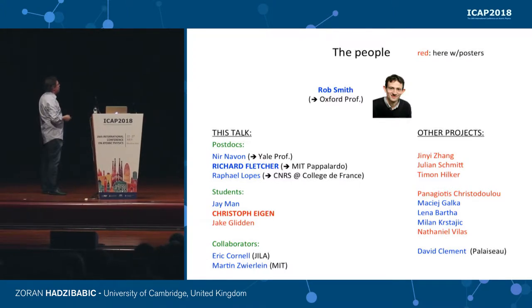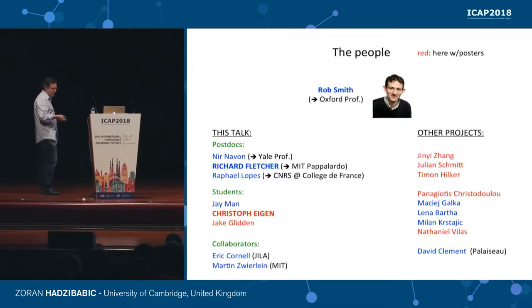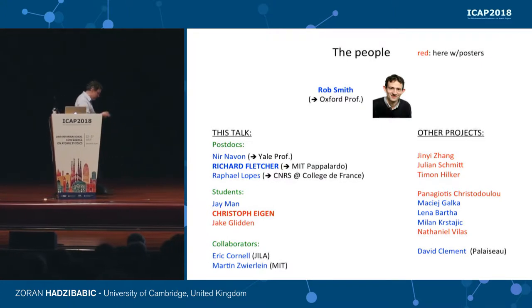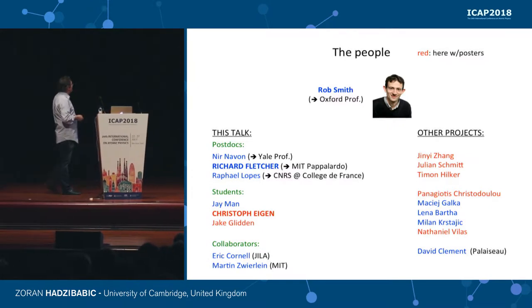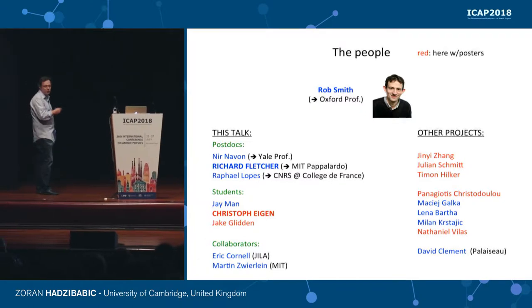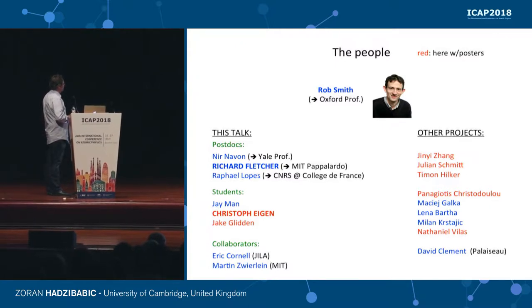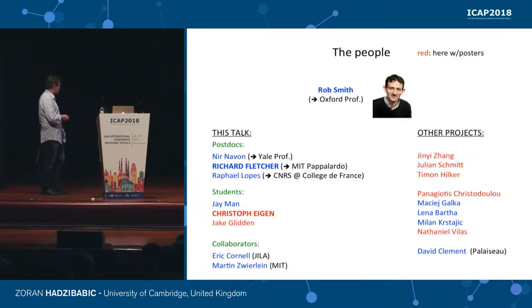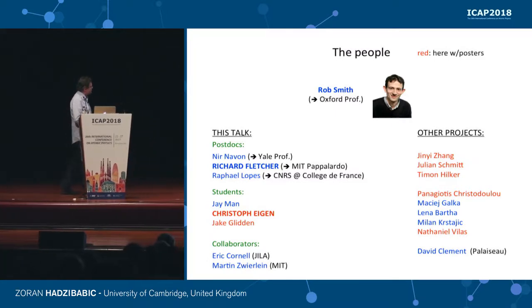These are the people who actually did the work — those in red are here presenting posters. Rob Smith has been my main collaborator for about 10 years, until very recently when he moved to another school. Rich Fletcher and Chris Eigen led the specific measurements I will focus on today, and we have also collaborated with Vera Cornell and Martin Zwierlein.